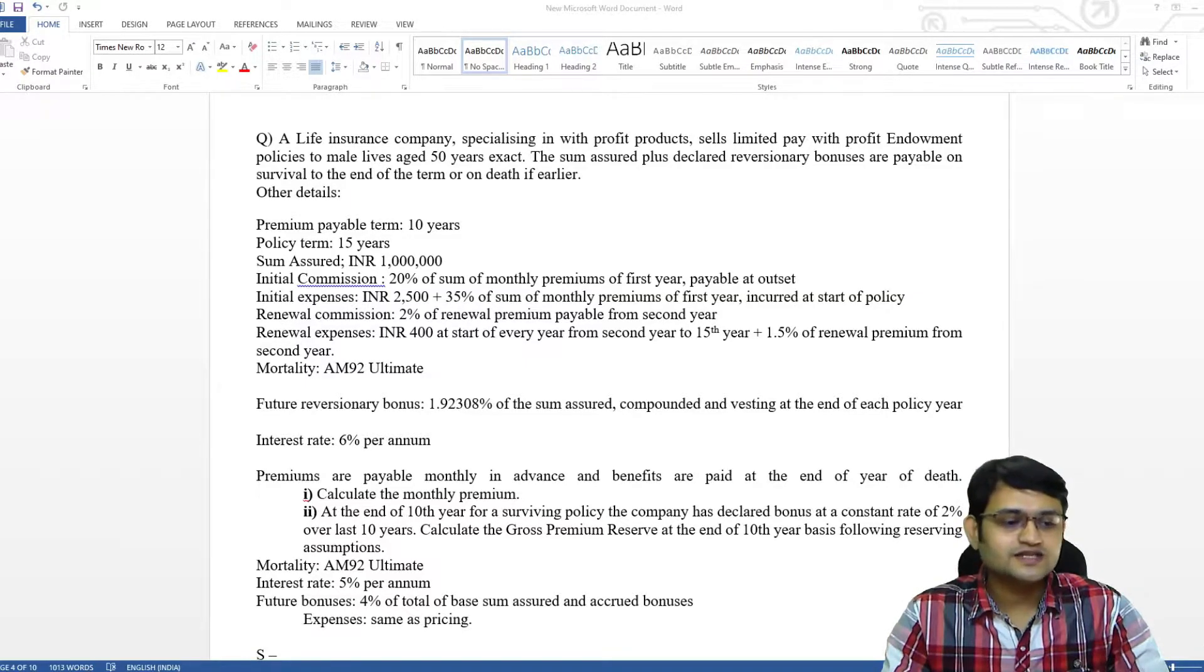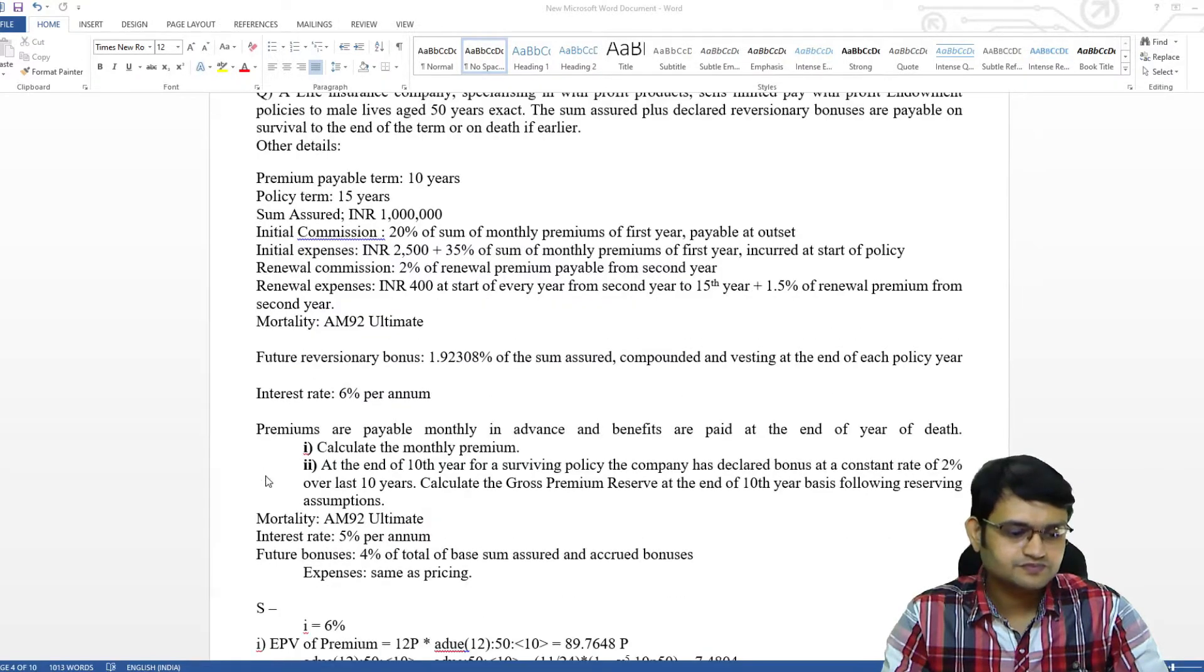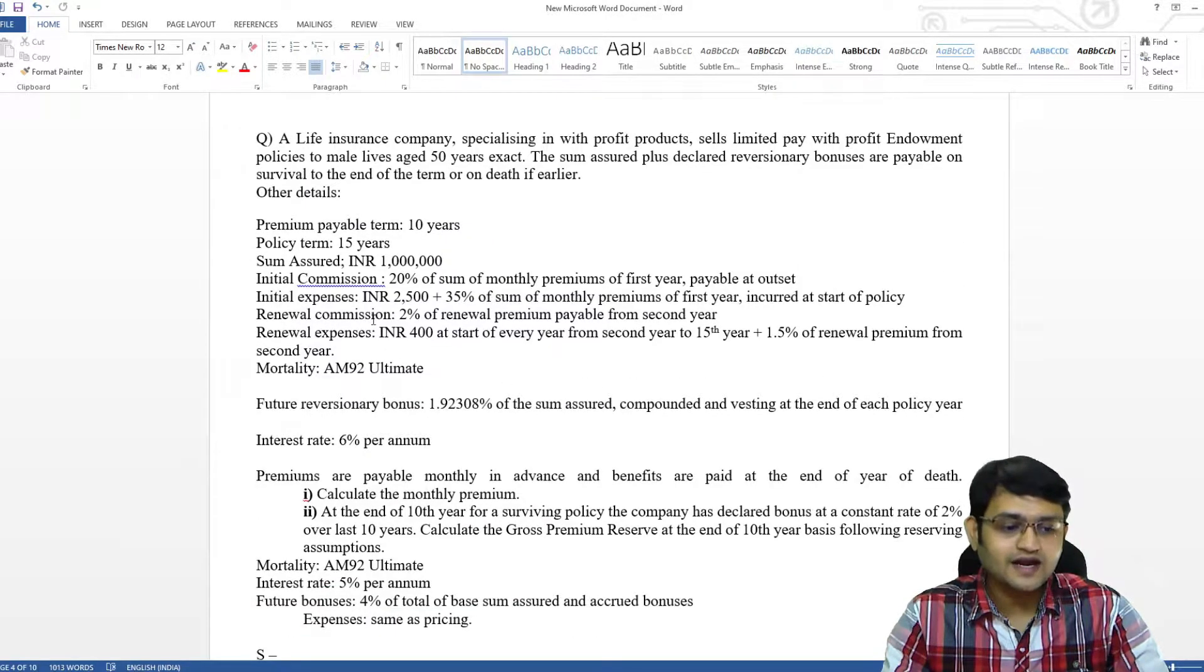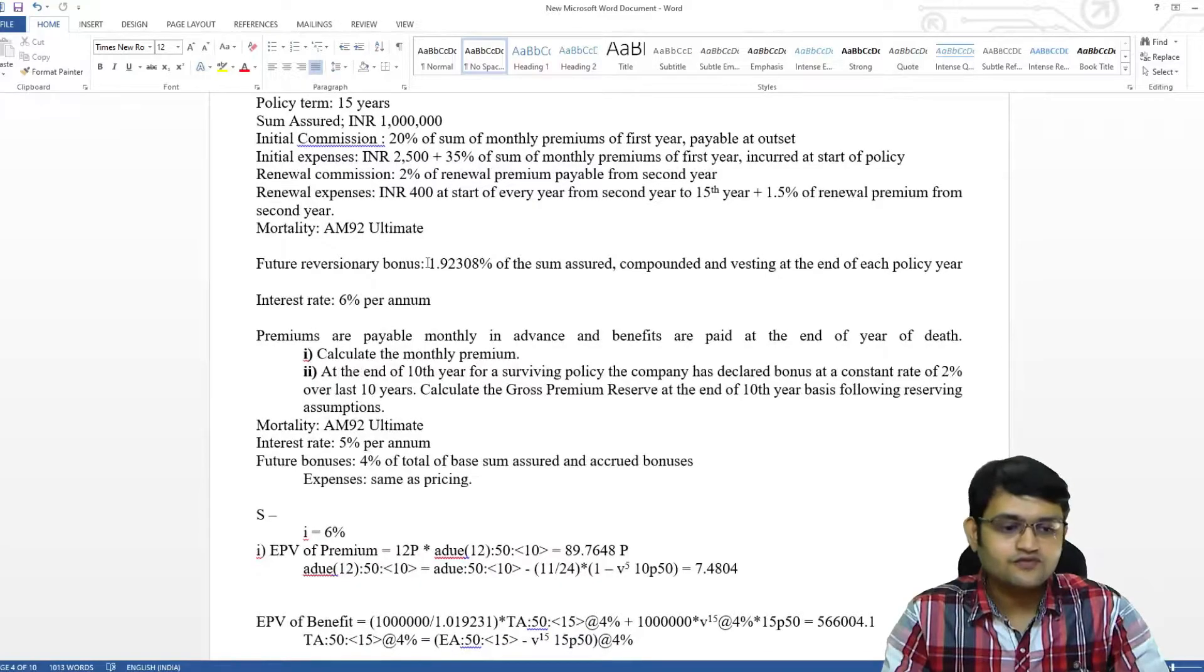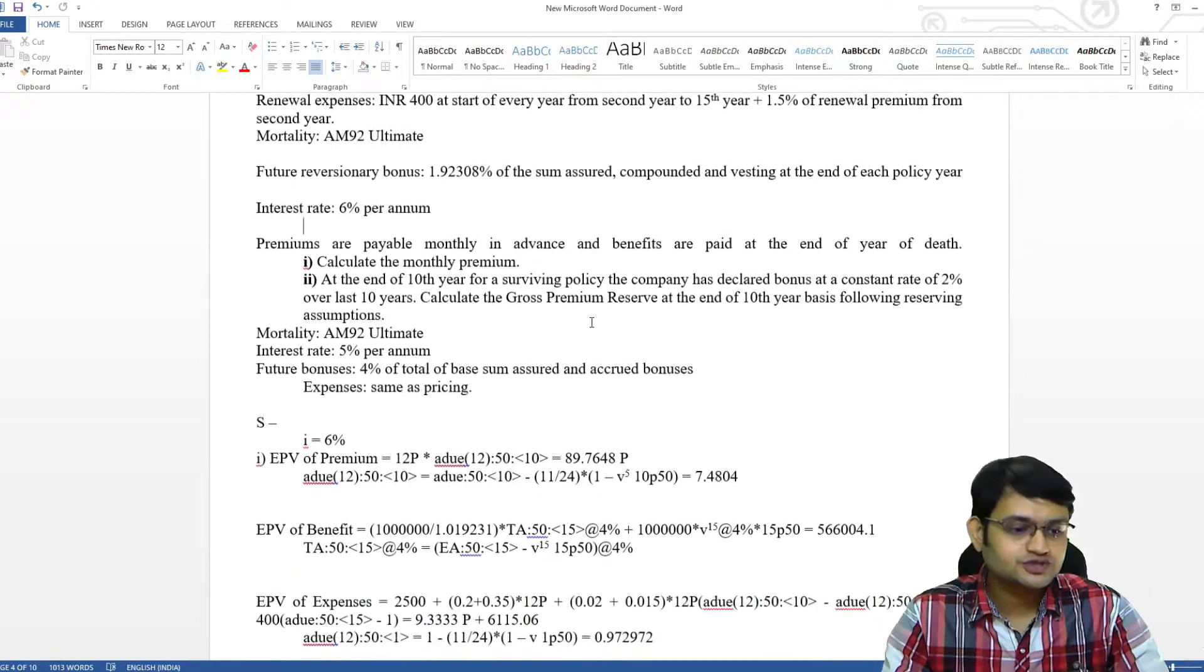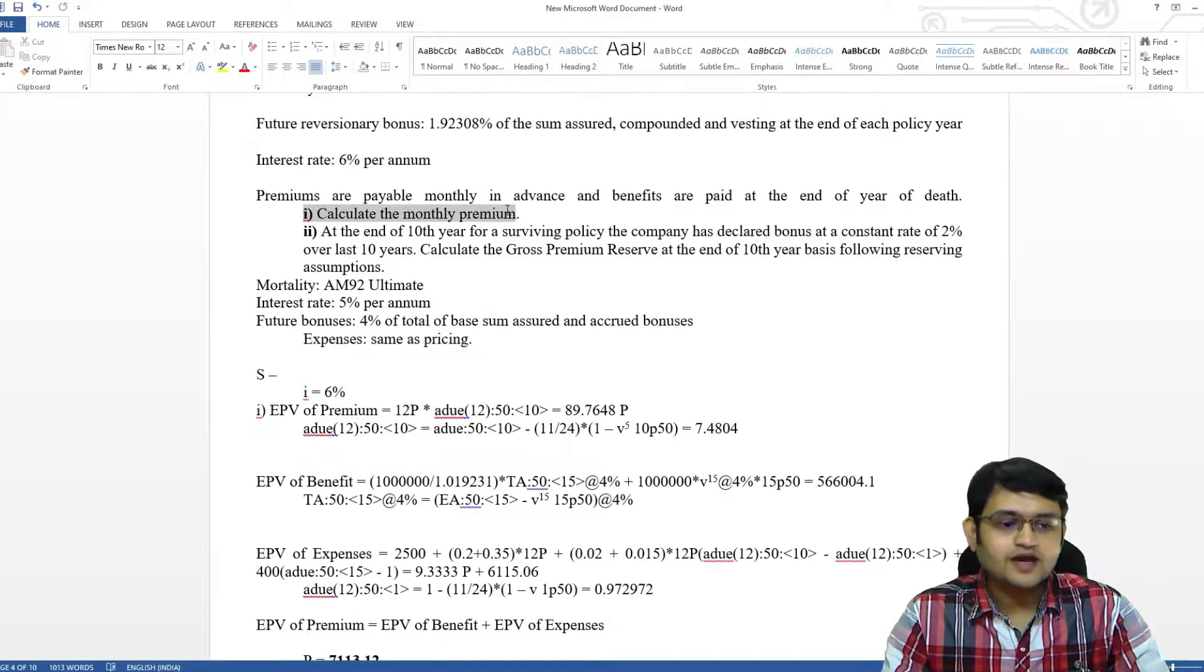So first, let's take this example of premium and reserves. Here we have commission and expenses. We have compound bonuses that gives us our I dash and we have to find our monthly premium and then calculate the reserves.